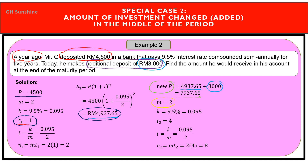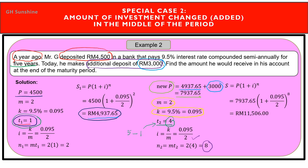The frequency and nominal interest rate remain the same, but the term changes. The total investment period is 5 years, and we have already accounted for 1 year, so T equals 4 years. I is the same as before, and the number of interest periods N equals 8. Using this new information, the future value is calculated by substituting all values. The amount Mr. G would receive at the end of the investment period equals RM11,506.00.